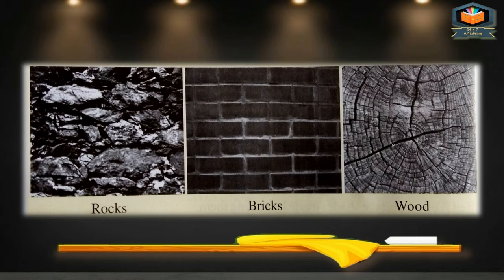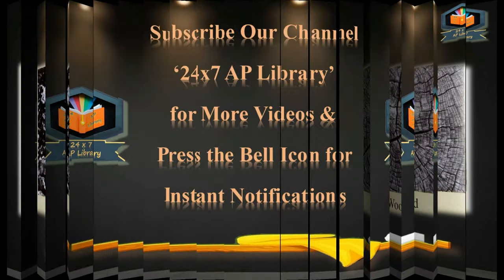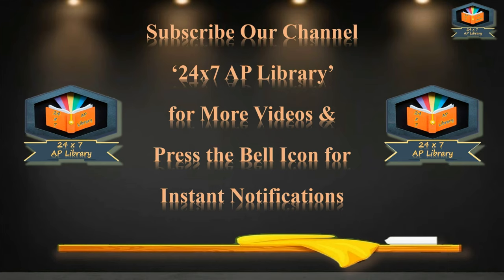Some examples of texture are shown on screen: rocks, bricks, and wood. In rock painting, we use texture to show the originality of rocks. In all these examples, texture is used to give originality to the picture or painting. This was all about the Elements of Art. In the next video, we will discuss the Principles of Art. Stay tuned to our channel. Subscribe to 24x7 AP Library for more videos and press the bell icon for instant notifications. Thank you.